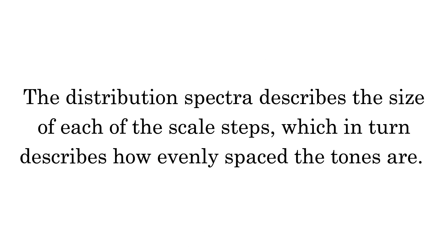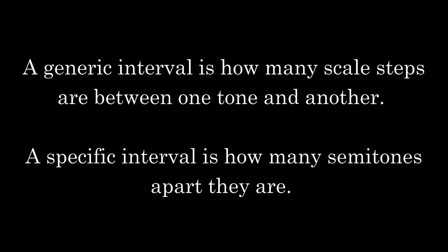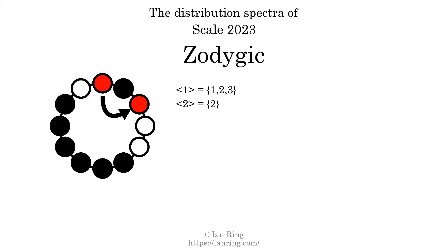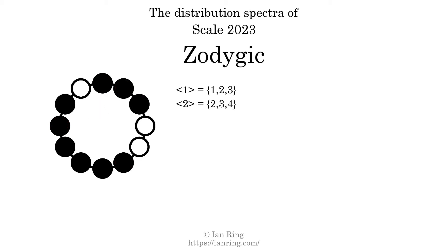The distribution spectra describes the size of each of the scale steps, which in turn describes how evenly spaced the tones are. A generic interval is how many scale steps are between one tone and another. A specific interval is how many semitones apart they are. The generic interval of one scale step comes in three different specific interval sizes: one semitone, two semitones, and three semitones. The spectrum width of this generic interval is two. The generic interval of two scale steps also comes in three specific interval sizes: two, three, and four semitones. The spectrum width is two.